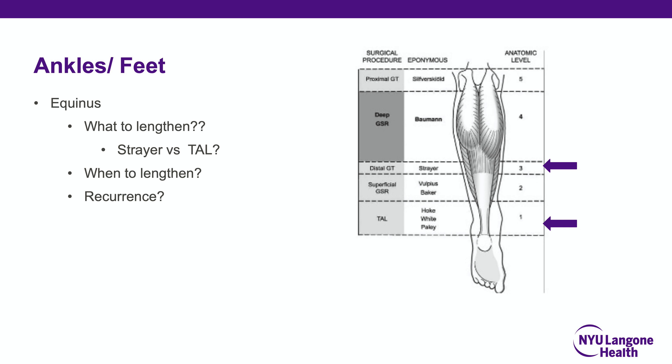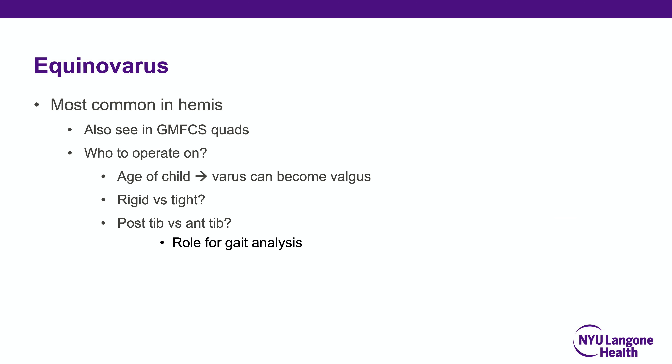For ankles and feet in CP, it's important to know what to lengthen — the Silfverskiöld test helps. You want to determine whether you're addressing the Achilles tendon or only the gastrocnemius, which correspond to different procedures: a Strayer-type lengthening versus an open or percutaneous tendo Achilles lengthening. Recurrence is large in younger children — in children under 8, the recurrence rate for operative equinus contracture is upwards of 70%. Equinovarus deformities are most common in hemiplegics and in high GMFCS level quads.